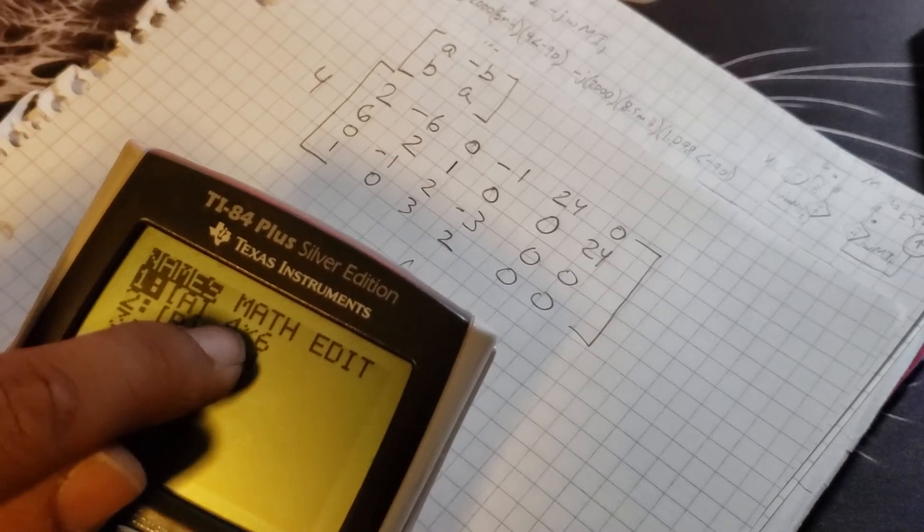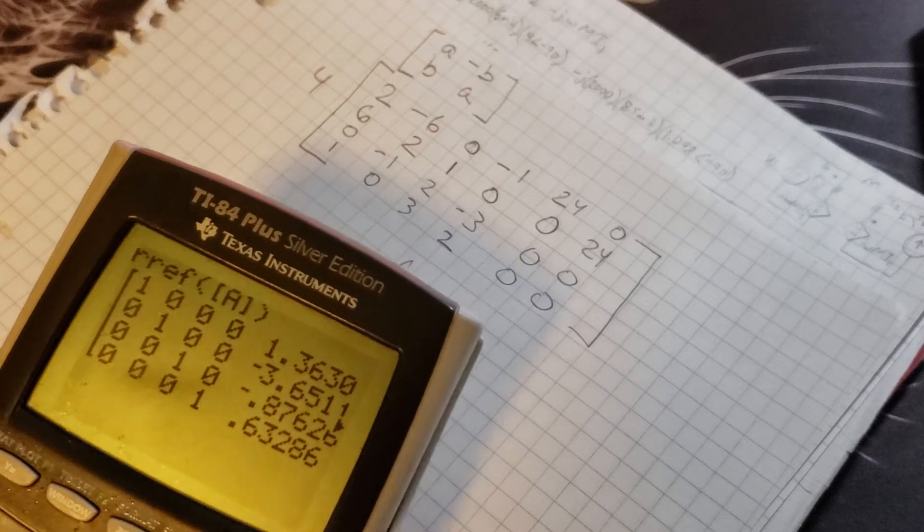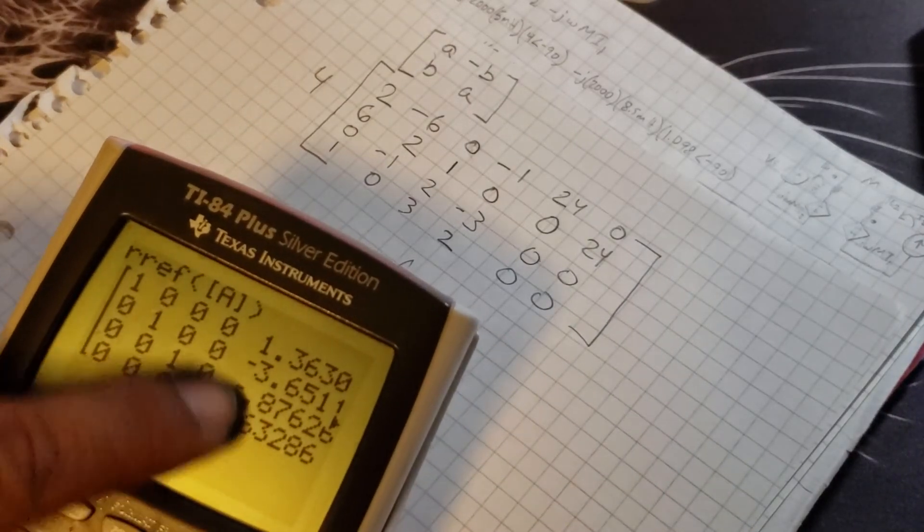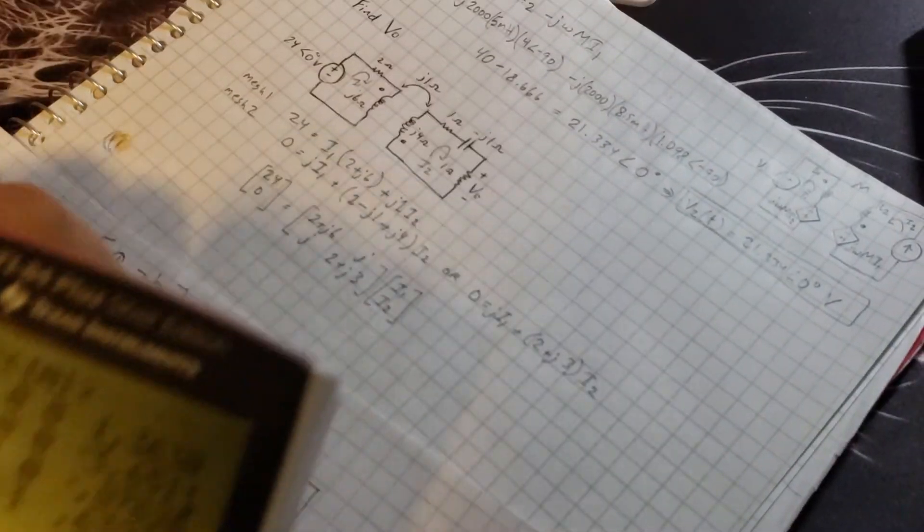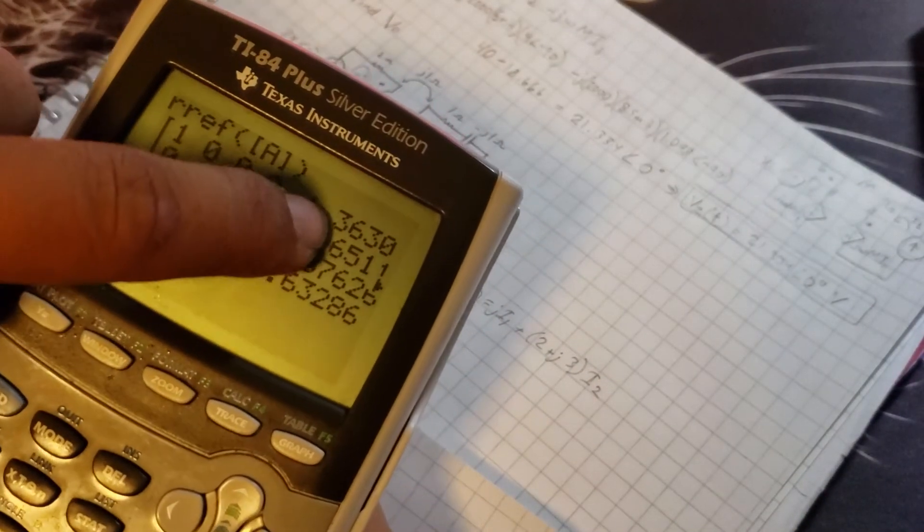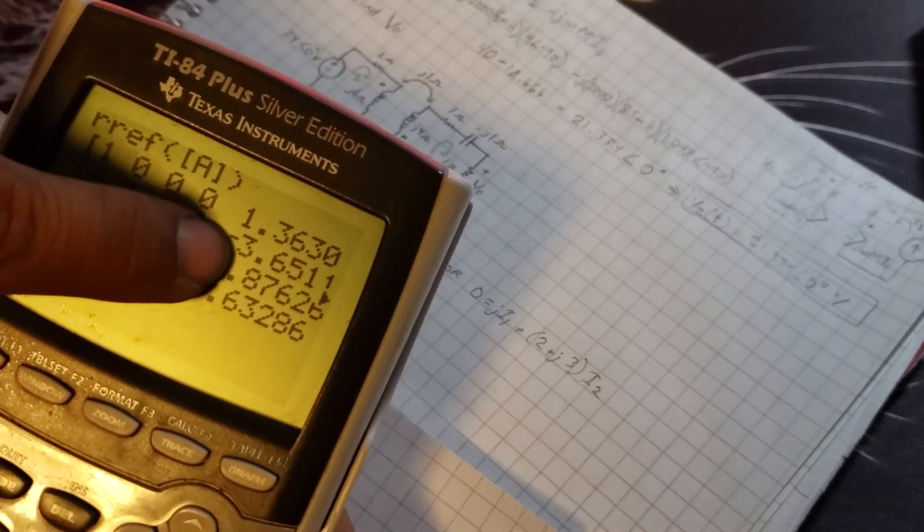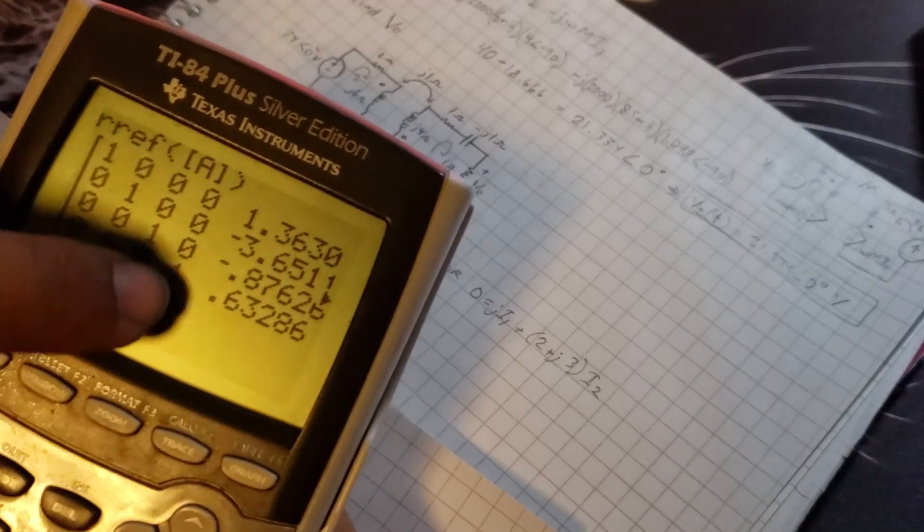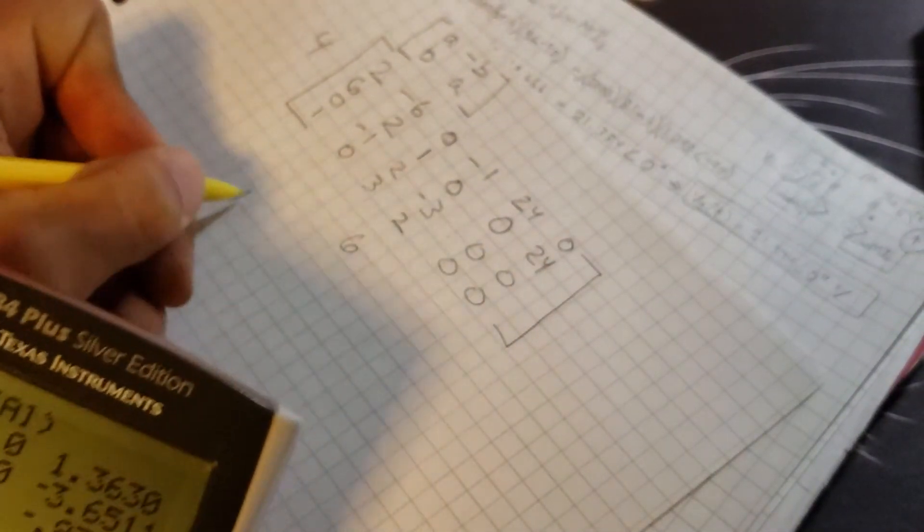This top two is i1, the first part is the real number, the second part's the imaginary. This is your i2. So I would write this as i2 equals negative 0.8763 + j0.6329.